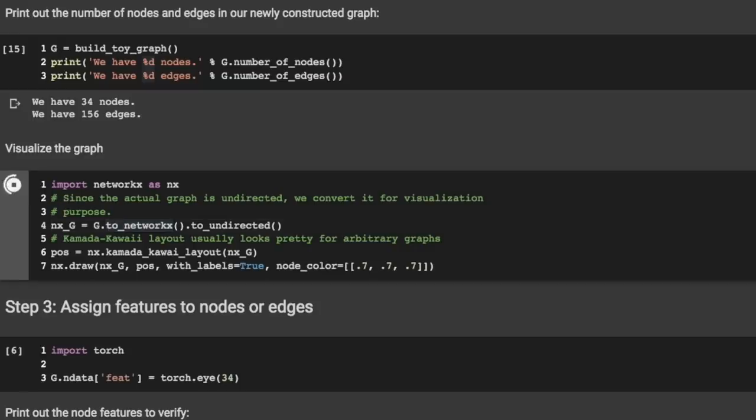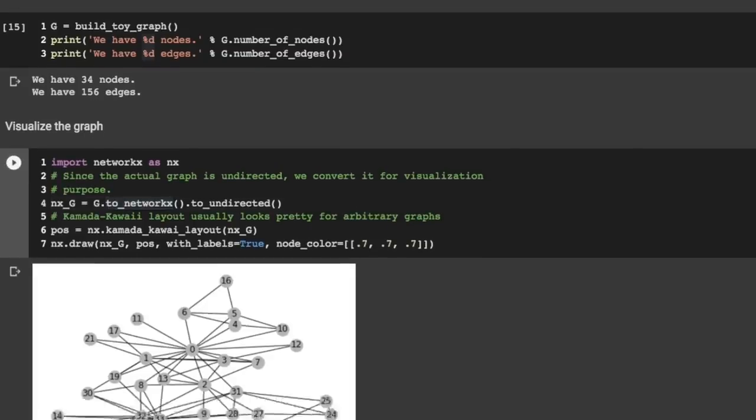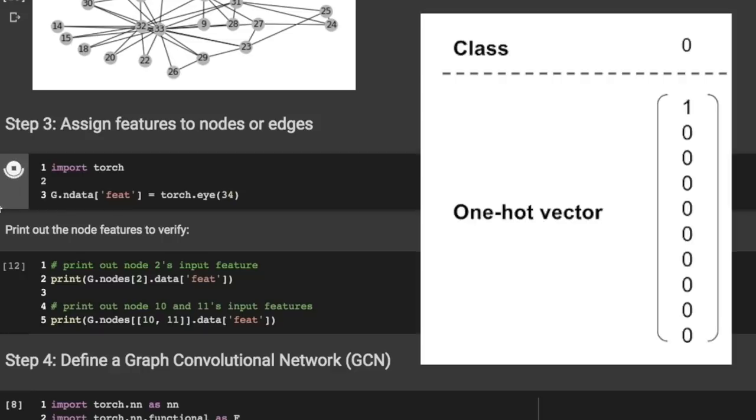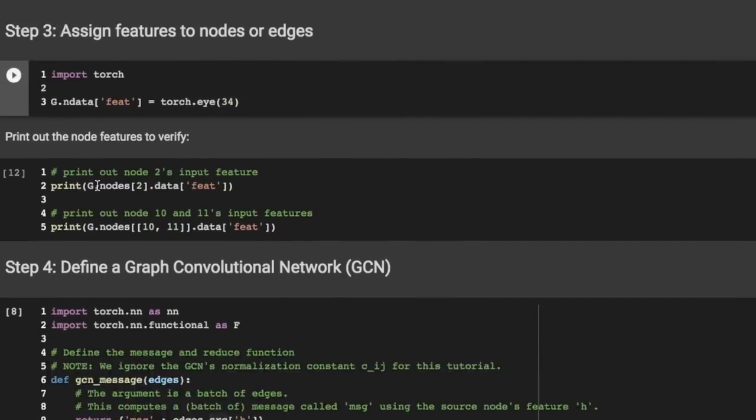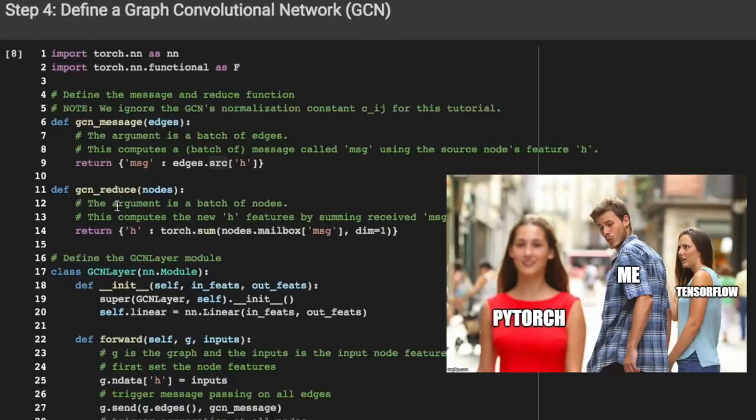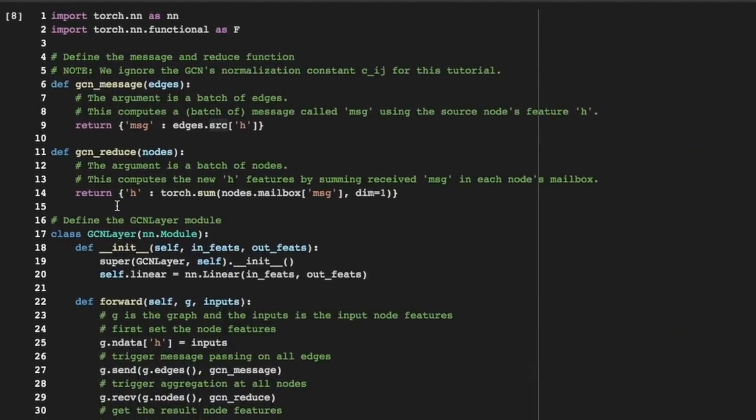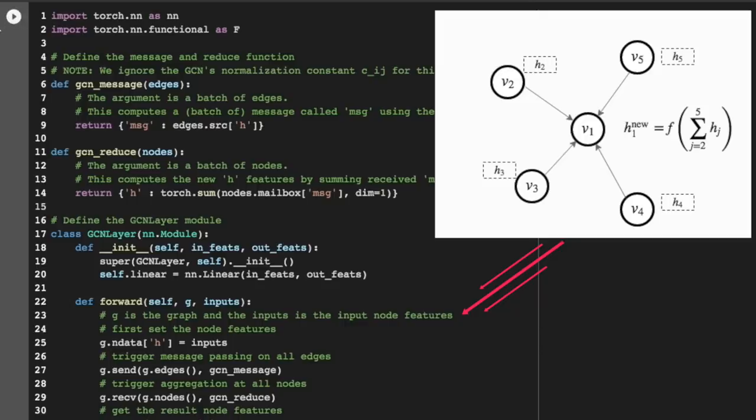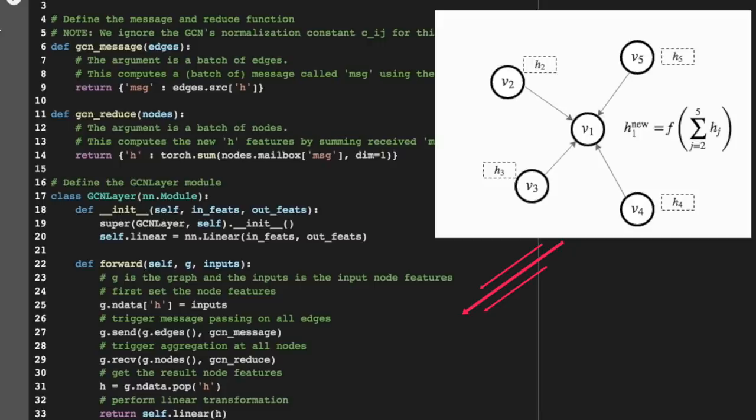We'll now give each node a simple feature all at once with a single line of code that turns each node into a one-hot vector. Now we're going to define our graph convolutional network. We'll first import PyTorch because it dethroned TensorFlow. Then we'll define what a given layer looks like. During the forward pass, we first set the input node features, then trigger message passing on all edges, then trigger aggregation at all nodes, get the resulting node features, and perform a linear transformation to help it generalize from the data better.